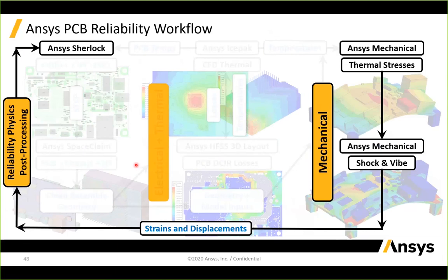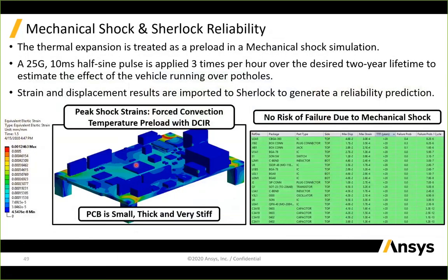With temperatures imported as a preload in Mechanical, we run the shock simulation to simulate potholes—a 25G, 10-millisecond haversine load applied three times per hour while driving. The peak shock strain results use forced convection temperatures as preload with DCIR losses for accuracy. In this case the PCB is small, thick, and stiff, so an experienced engineer might judge from aspect ratio alone that shock isn't an issue. But for larger boards, hotter temperatures, or more intense shock loads, analysis with a tool like Sherlock is necessary to truly quantify reliability.